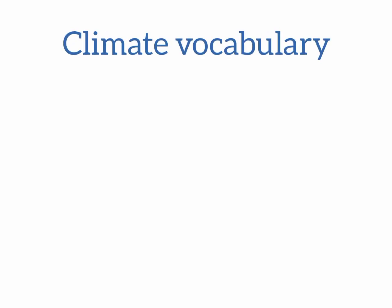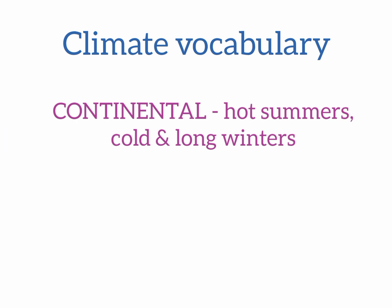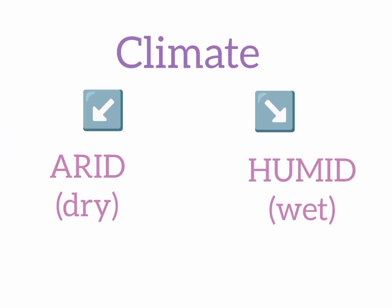Here are some words to describe the climate. Continental climate is characterized by hot summers and cold, long winters. In countries with a tropical climate the weather is hot and the temperature is above zero all year round. Arid climate means dry climate, and humid climate is the climate with a high amount of water in the air.